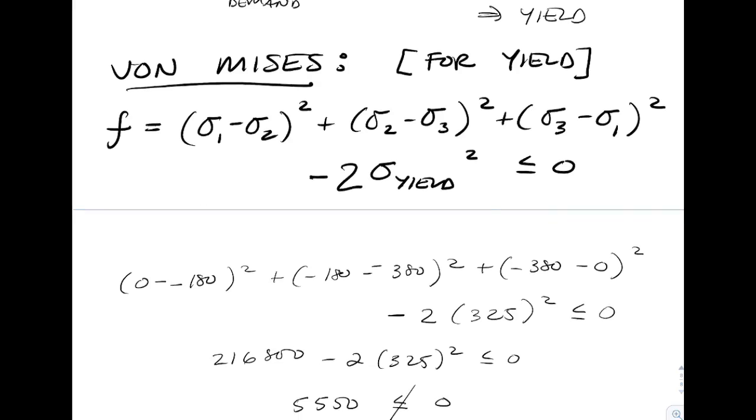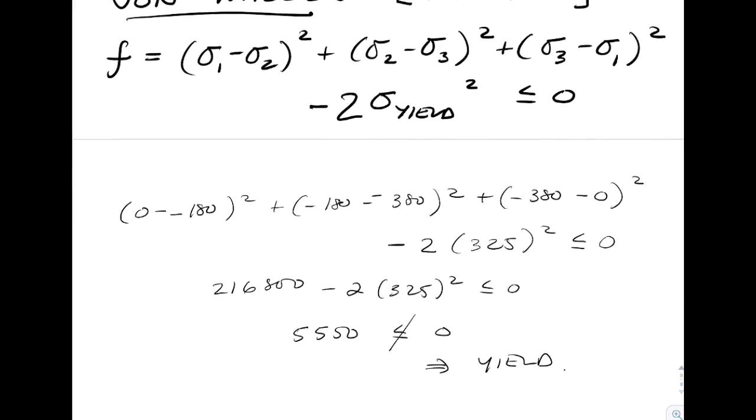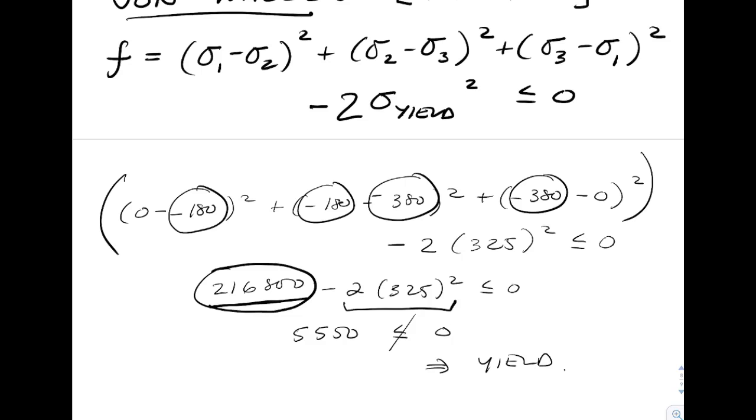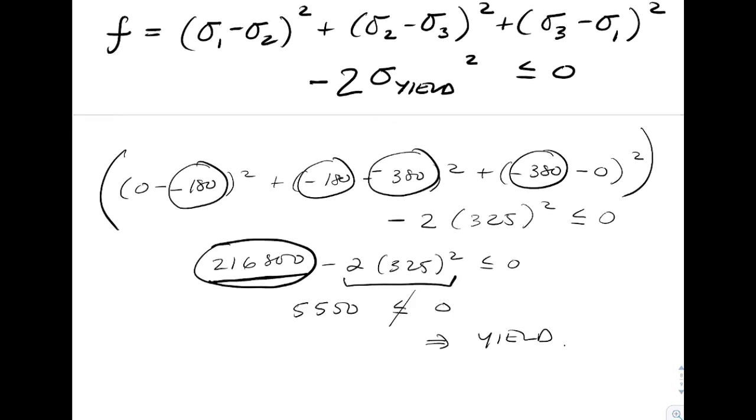From von Mises, we end up running through our numbers, changing sigma 2 and sigma 3. Keeping track of that left-hand side in two distinct quantities, that number represents the sum of all the squared values. Subtracting twice sigma yield squared, we end up with a positive number, which is not less than 0. So we now have predicted yielding with von Mises.